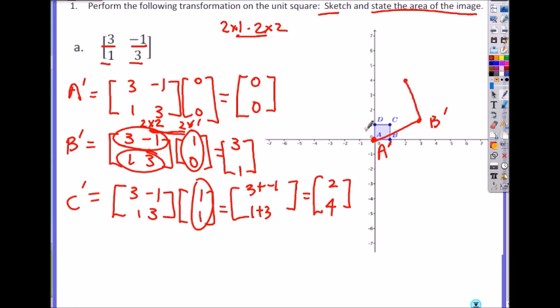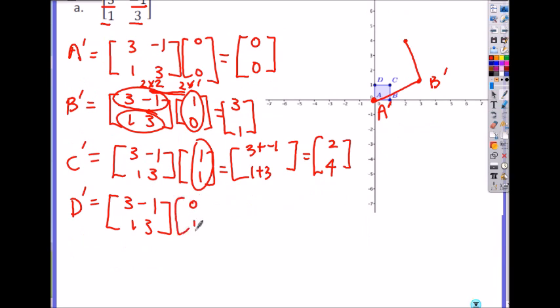2 comma 4. So it will be squared look like this, right? Last one, D prime. 3, negative 1, 1, 3. You multiply it with D, which is 0 comma 1. So then, now it's 0 and 1, so these become 0. So you just get the Y values, right? Negative 1 and 3. 0 times 3 is 0 plus 1 times negative 1 is negative 1, 0 times 1 is 0, 1 times 3 is 3. So that's negative 1, 3.